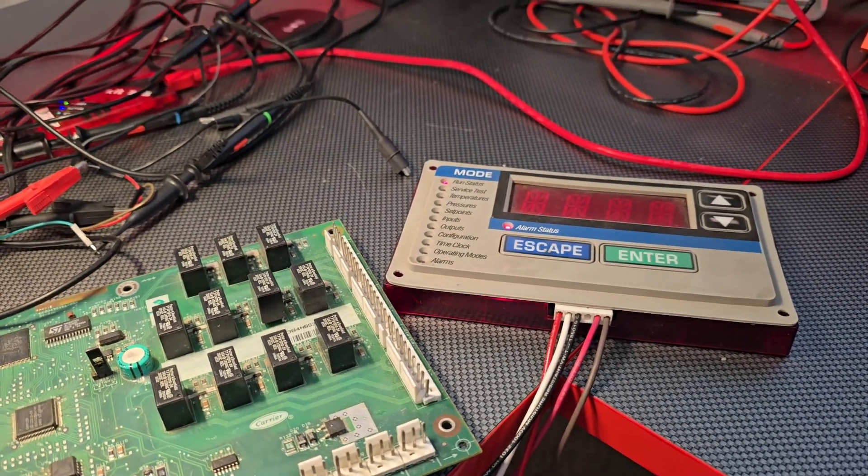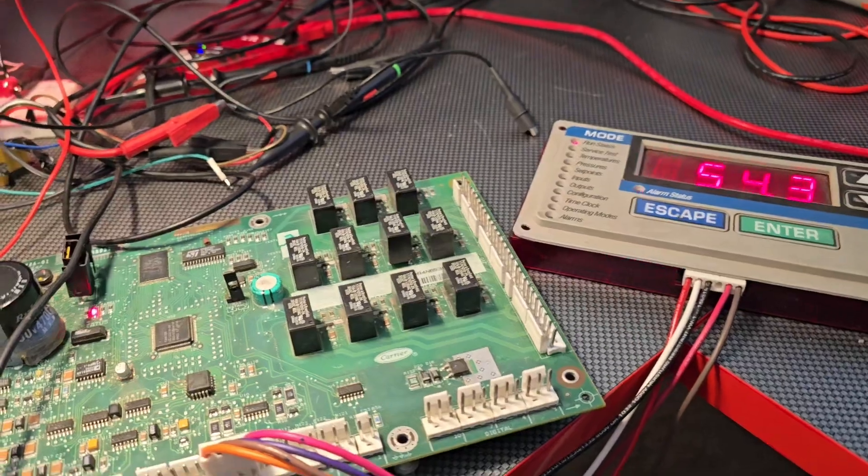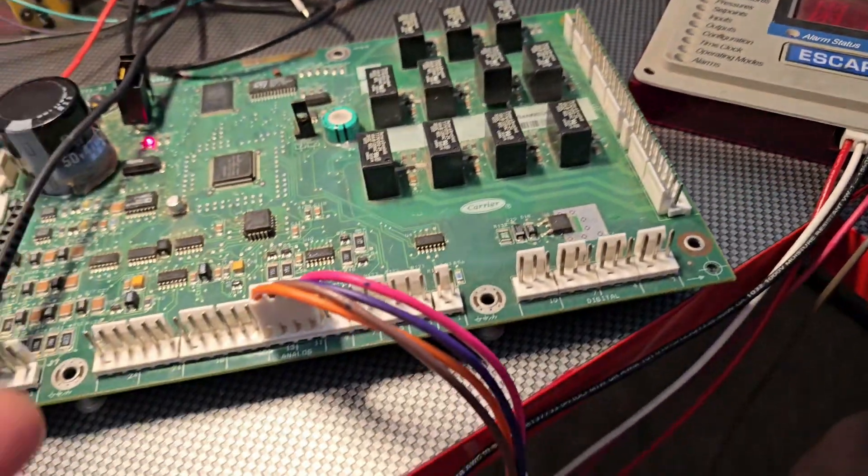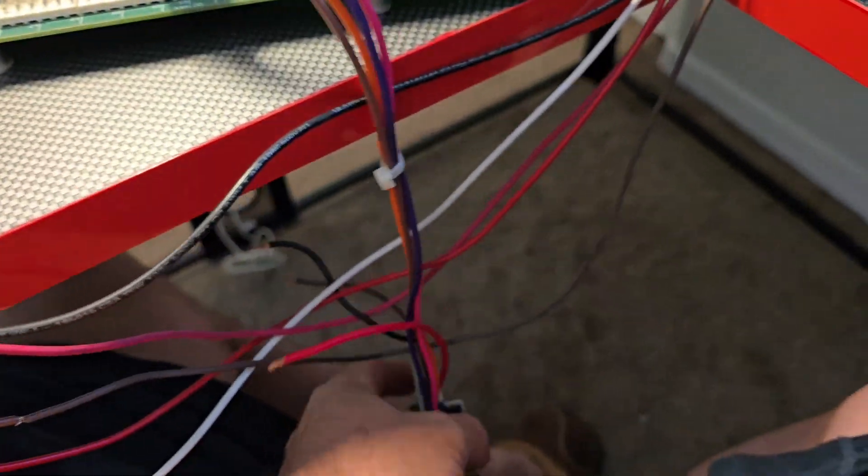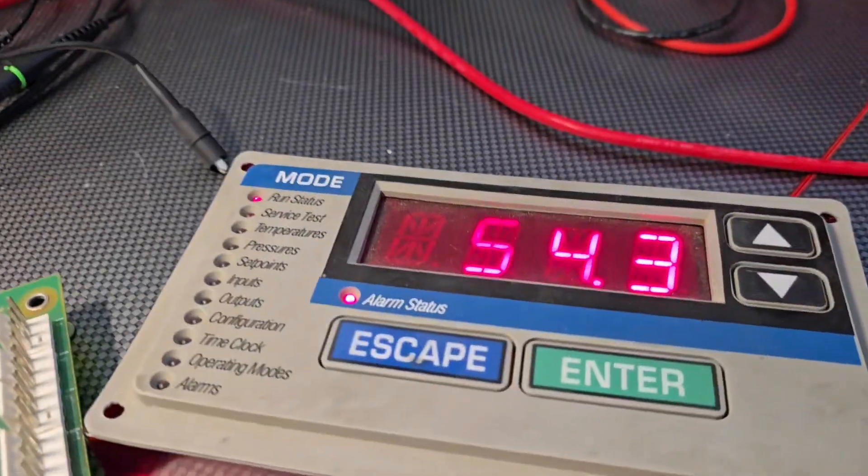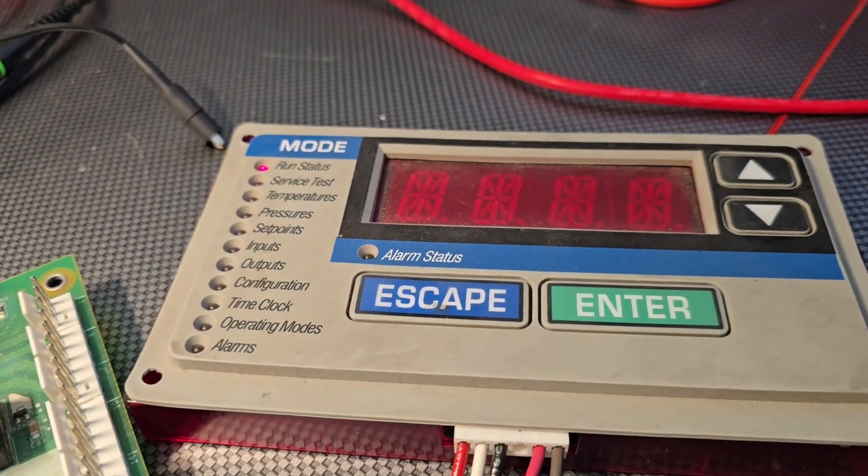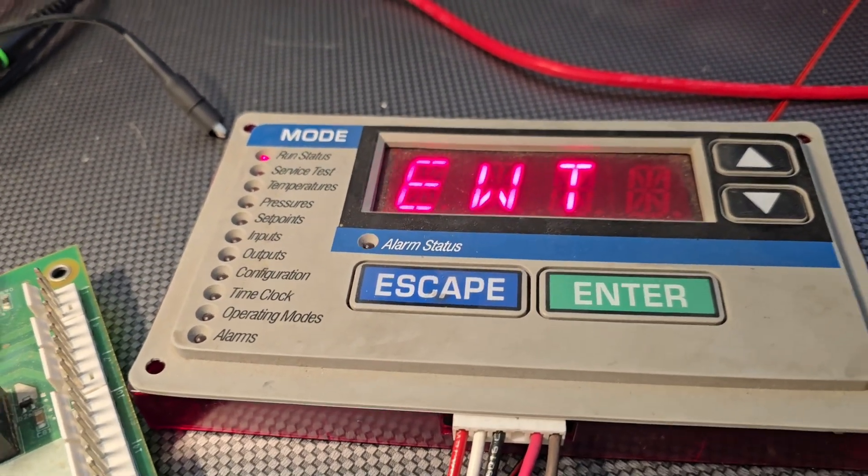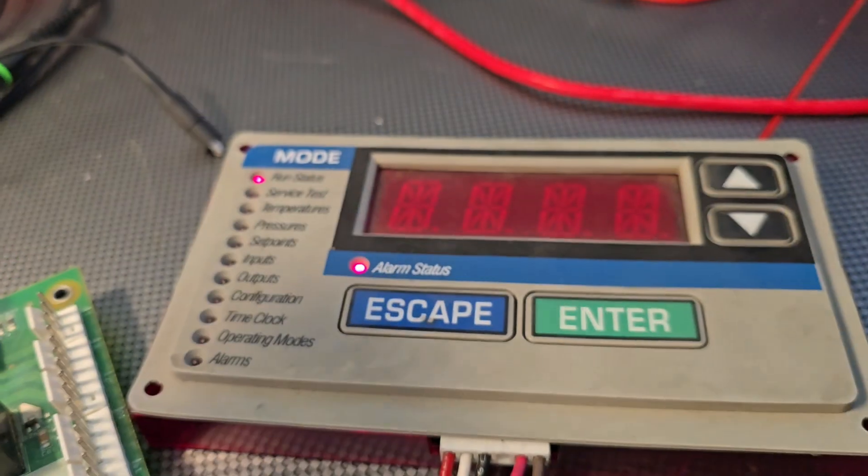So I just hooked up some potentiometers for thermistors. That's why it's reading actual entering and leaving water temperature. This here is one of those scrolling marquees that I did a repair to.